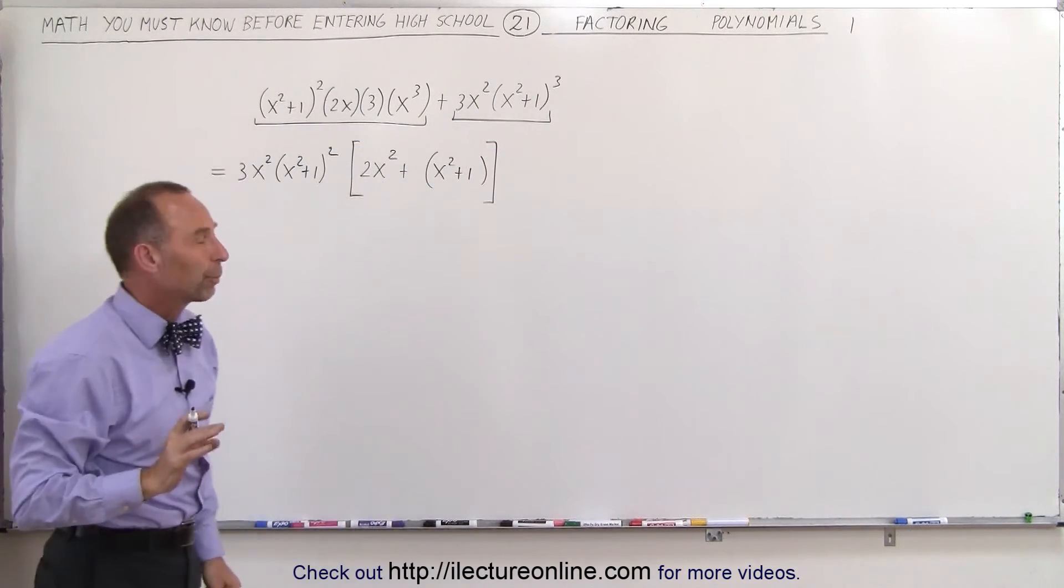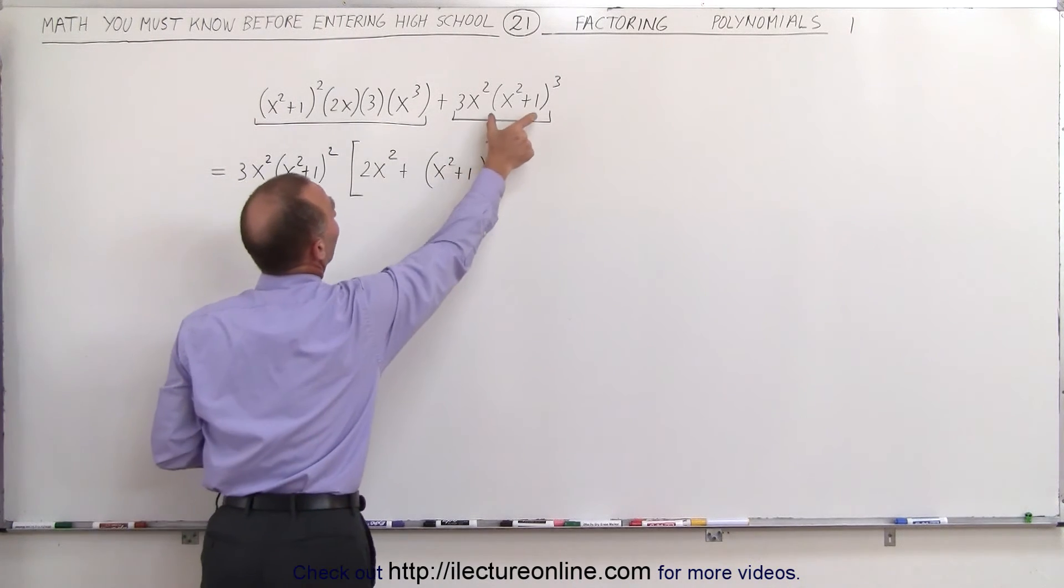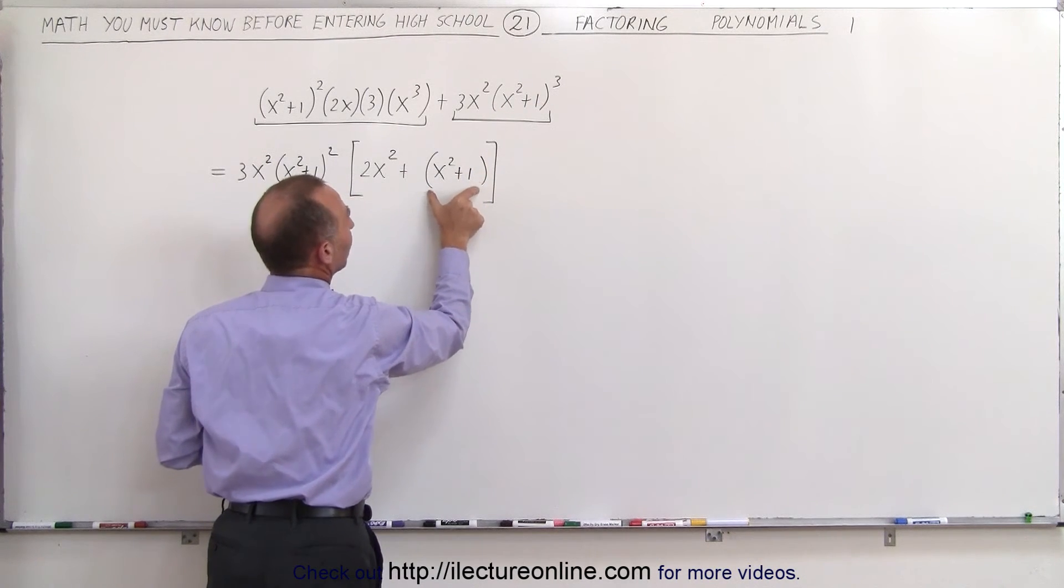I intentionally put parentheses around it, not that it was necessary, but to show you that when I factor out an x squared plus 1 squared, I'm left with x squared plus 1 to the first power.